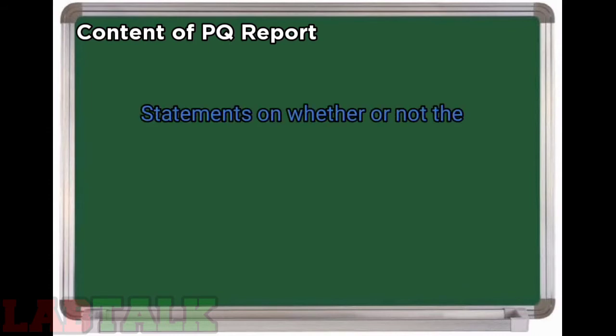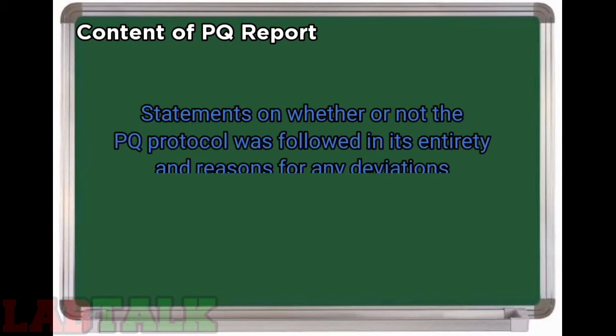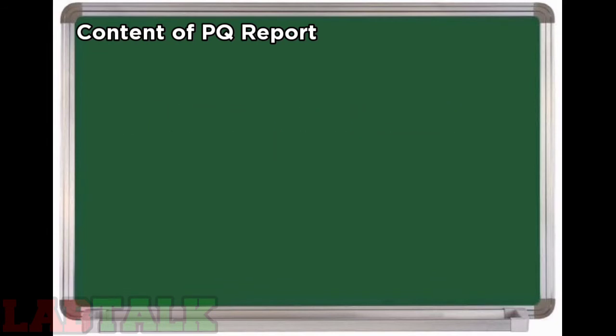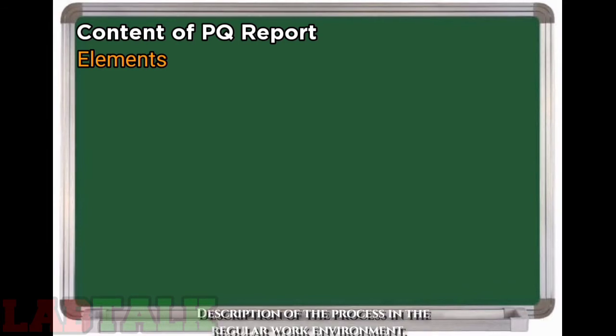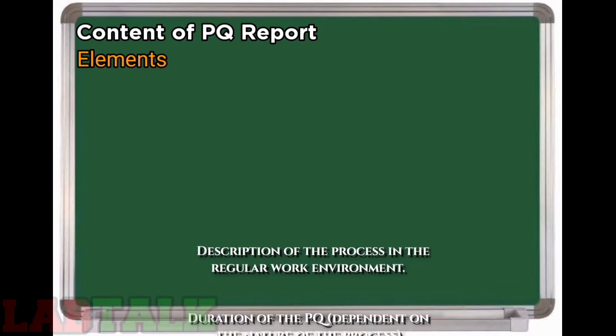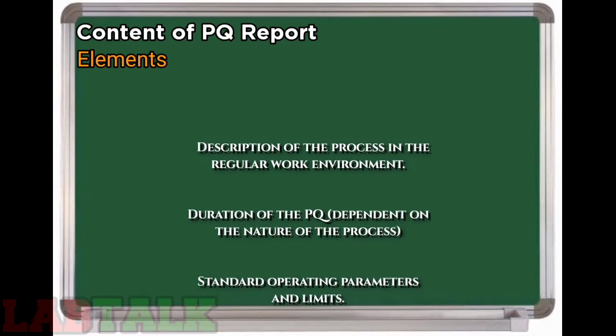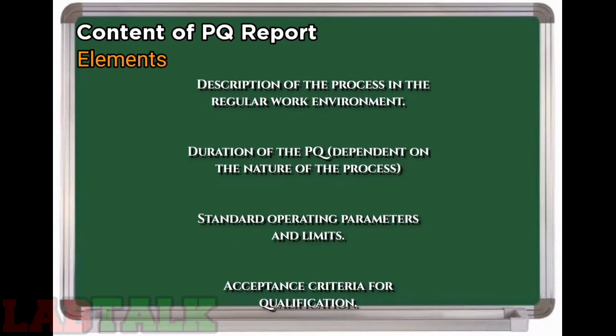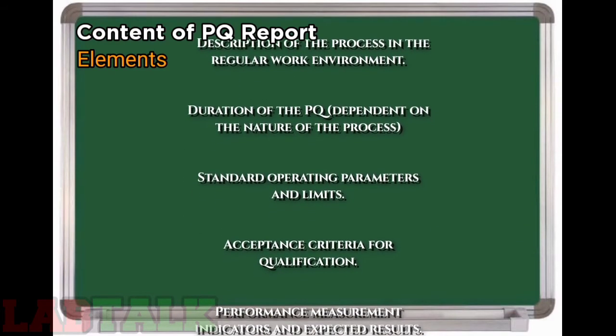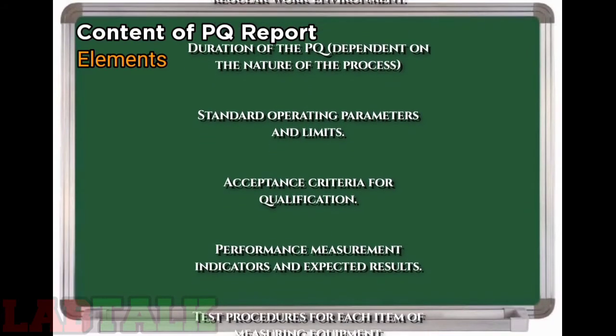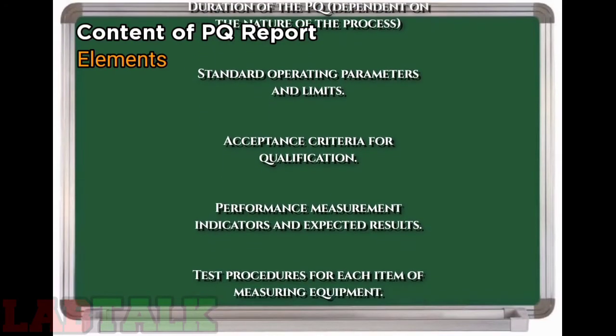Performance qualification report should include statements on whether or not the PQ protocol was followed in its entirety and reasons for any deviations. Elements that should be included in the PQ protocols are: description of the process in the regular work environment, duration of the PQ, standard operating parameters and limits, acceptance criteria for qualifications, performance measurements, indicators and expected results, test procedure for each item of measuring equipment, test data to be gathered, and the time frame and schedule for gathering data.